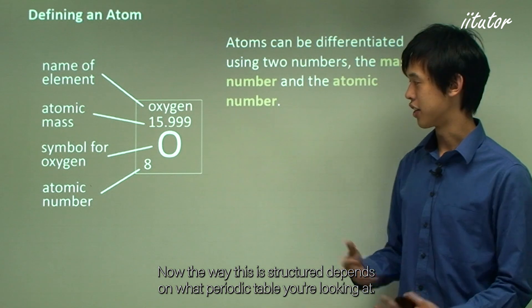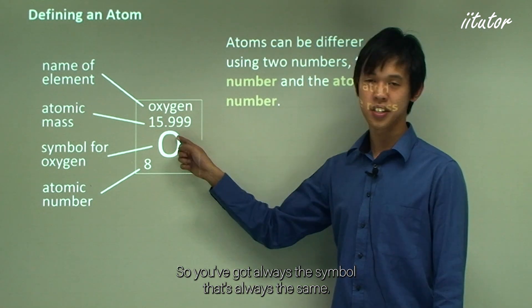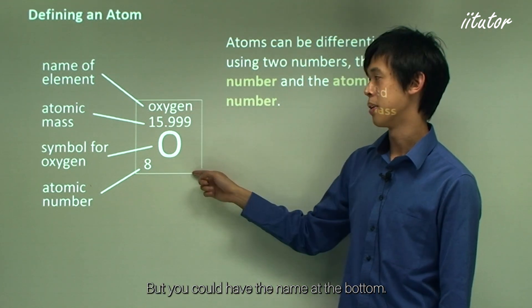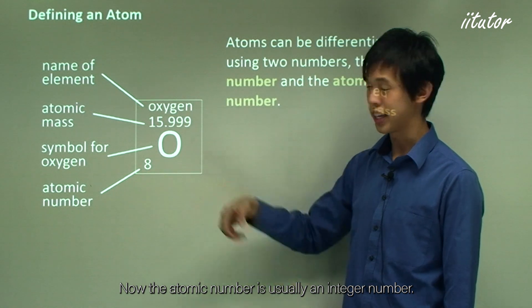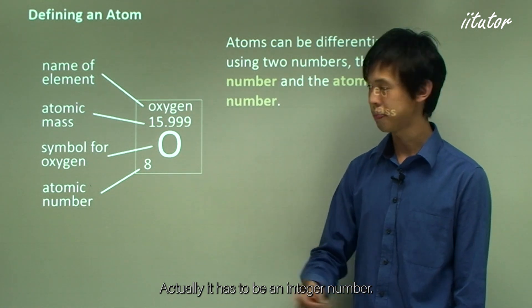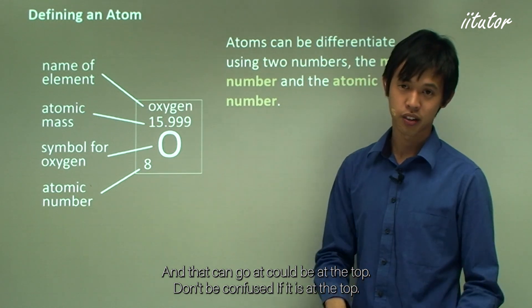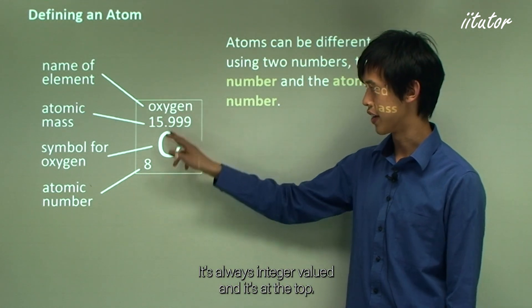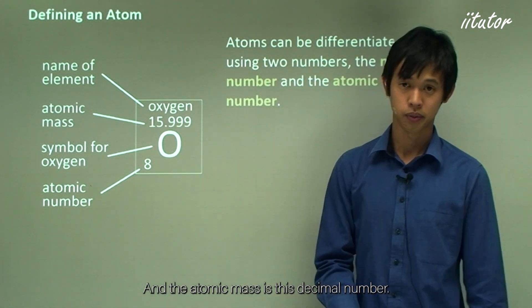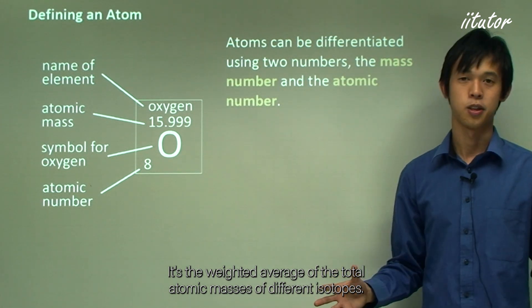The way this is structured depends on which periodic table you're looking at. You always have the symbol, and you could have the name at the bottom. The atomic number is always an integer — no decimal points — and the atomic mass is a decimal number representing the weighted average of the total atomic masses of different isotopes.